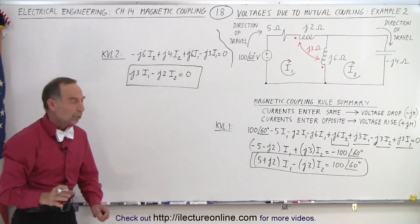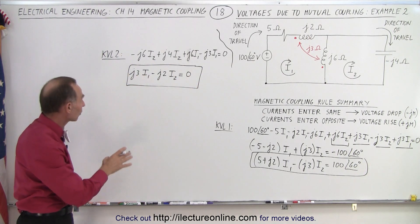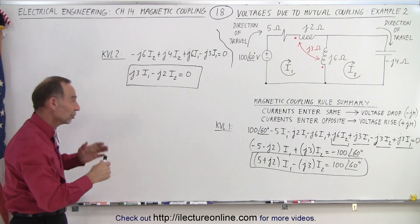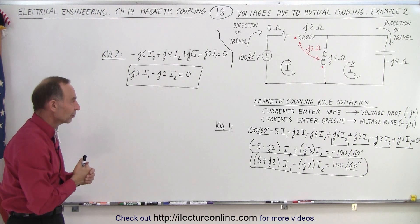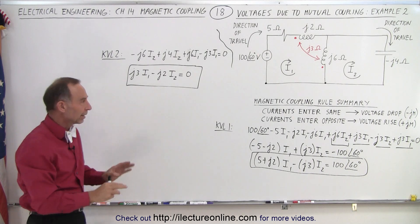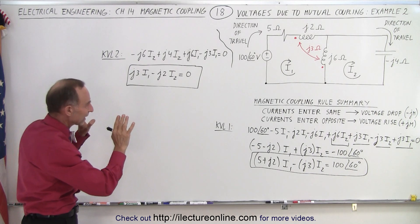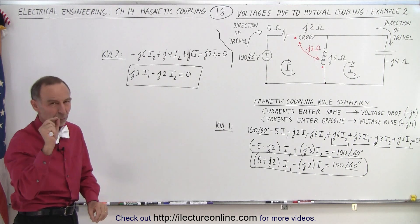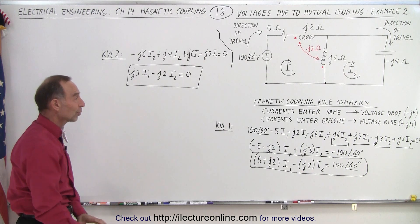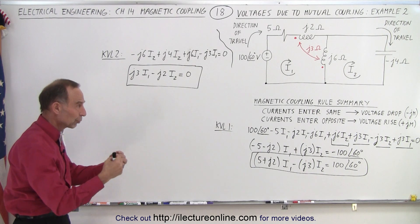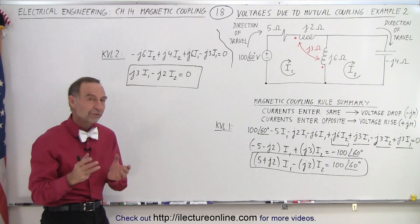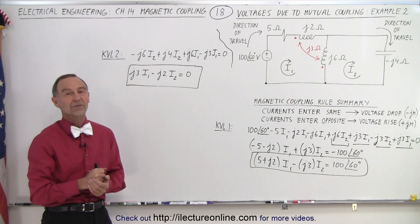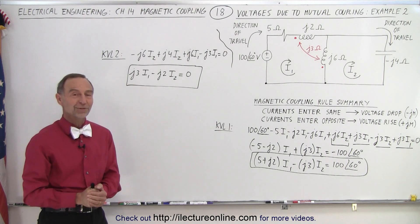Now I have my two KVL equations — KVL1 and KVL2 — with two unknowns, I1 and I2. I can go ahead and solve those, which I'll show in the next video. The most important part is getting these two equations right. If you make one little mistake somewhere you won't get the correct answer, so go through it very carefully, follow the rules to the T, and you'll get the right equations. That is how it's done.